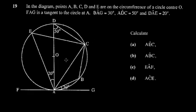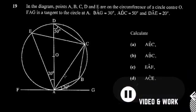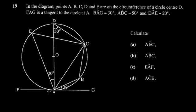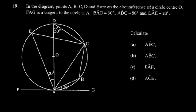Next question is on circle geometry. You're shown a diagram with labeled points. Most of the time you can read the required information directly off the diagram, so there's no need to refer back to the text unless you're unsure what an angle refers to. Before starting, it's good to read the diagram. For example, this angle here — there's a theorem that says this angle must equal this other angle.